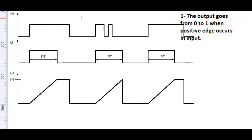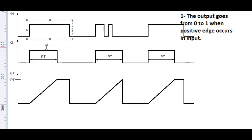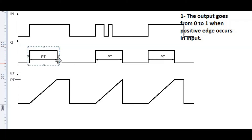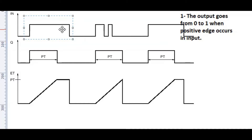Now let's see the second working principle. As you can see from the graph, the input is still high but the output goes to 0. This means when the timer completes — let's say we have set the timer for 10 seconds and those 10 seconds finish — the output goes to 0, even if the input is still high. That means the output is independent of the input and depends on the timer.